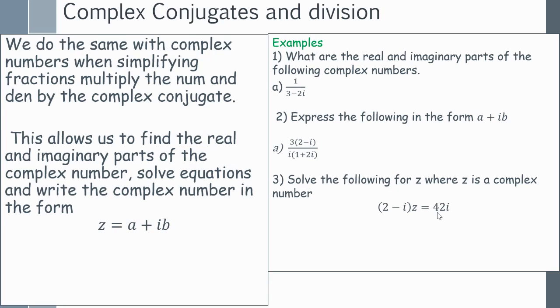Especially when we have a complex number on the bottom, we want to multiply both the denominator and the numerator by the complex conjugate. This is similar to rationalizing fractions when they have surds in the base. We do this because it allows us to find the real and imaginary parts of complex numbers, to solve equations, and to write complex numbers in the form z = a + ib rather than something on the denominator.